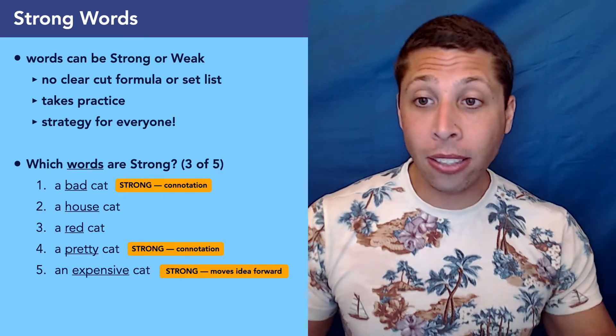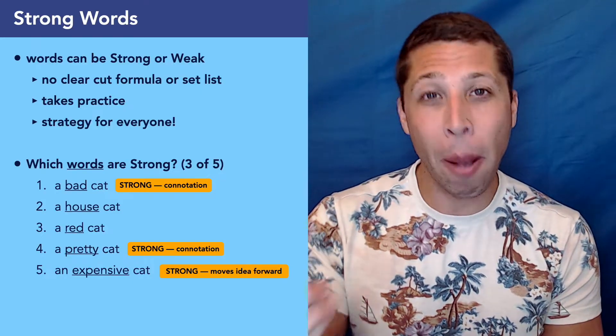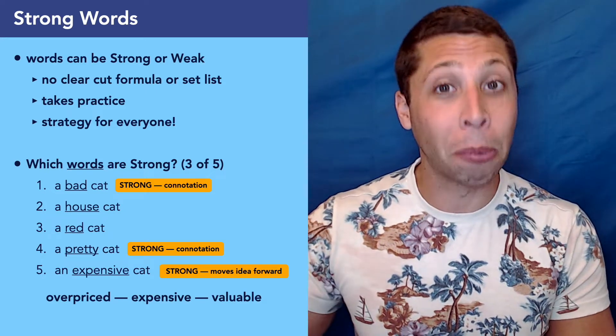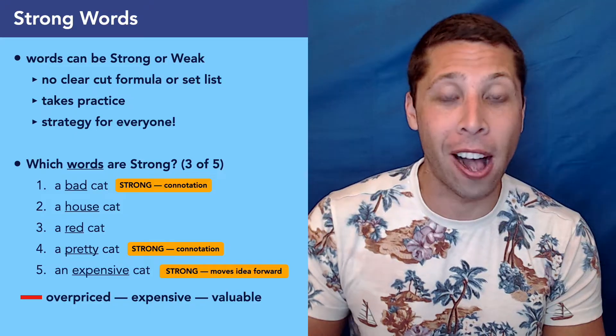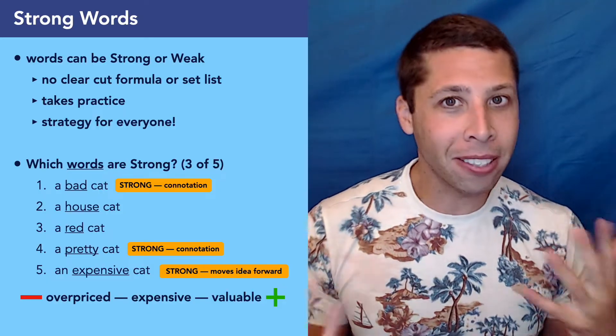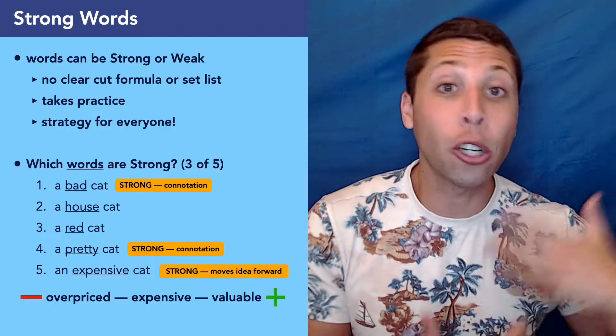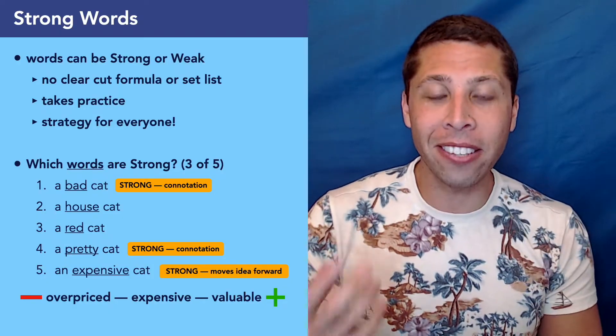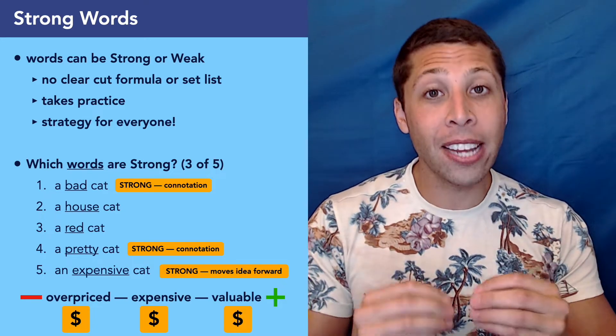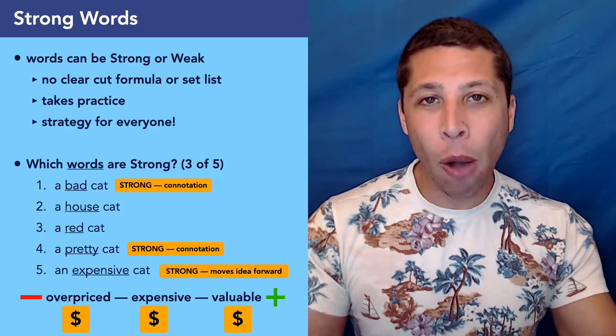So that's a stronger word because it's bringing more meaning to this idea of the cat, but connotation isn't everything. If you told me it was an expensive cat, that's still a strong word, but the connotation, I don't know. Expensive is a tricky word. It could go either way, but I still know something meaningful now about that cat that I didn't before. If you told me it was an overpriced cat, then I would say, yeah, you paid too much. If you told me it was a valuable cat, I'd say, oh yeah, good deal. Expensive, sometimes I think that things are expensive because I don't want to pay the price or sometimes expensive is good.